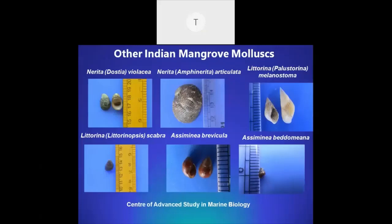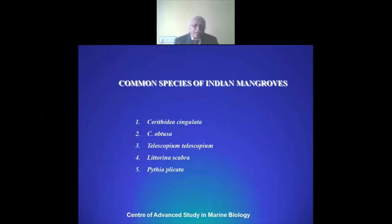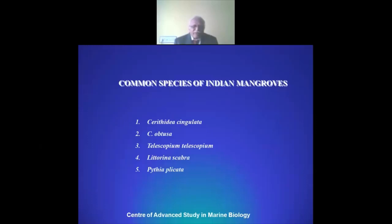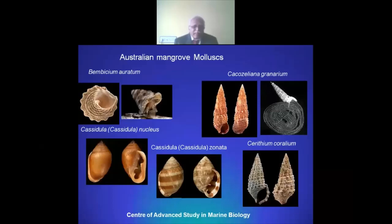These slides give the list of mangrove molluscan forms distributed in Indian mangroves, including arboreal pulmonate forms in Pichavaram, and the animals found in trees across various mangroves. Coming to the commonality of malacofauna distributed in Indian mangroves, five species — Cerithidea cingulata, Cerithidea obtusa, Telescopium telescopium, Littoraria cambra, and Pichia pilikeca — enjoy their distribution irrespective of mangrove location.